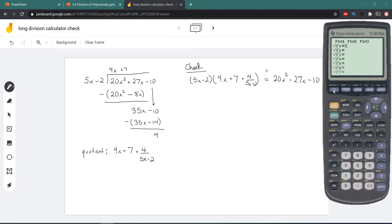What we can do is go to y equals and first we'll put in our dividend 20x squared plus 27x minus 10. Now we'll go down to y2 another line and we're going to input our divisor times our quotient.